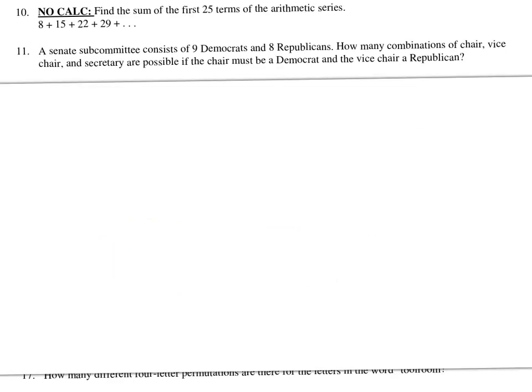Next, a Senate subcommittee has 9 Democrats and 8 Republicans. How many combinations of chair, vice chair, and secretary are possible if the chair must be a Democrat and the vice chair must be a Republican? I can't just do 17P3 here, so I'll use the fundamental counting theorem. Chair: 9 options (Democrat). Vice chair: 8 options (Republican). Secretary: anyone remaining, so 17 minus 2 equals 15 options. Multiply those together.